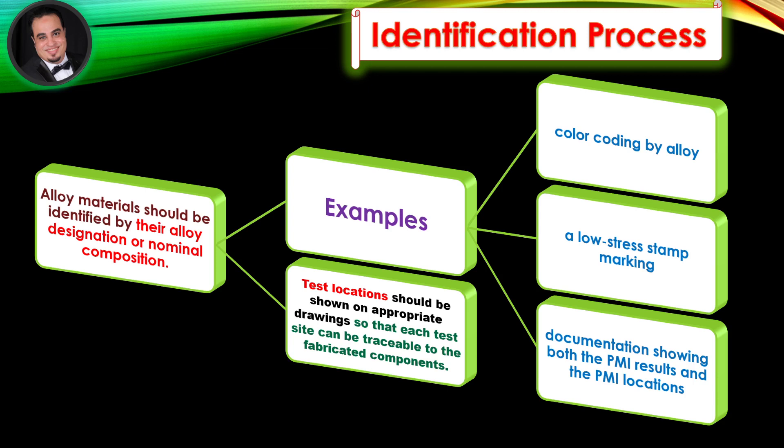Identification process: Alloy materials should be identified by their alloy designation or nominal composition. Examples of some acceptable identification methods are: color-coding by alloy, a low-stress stamp marking indicating that the test has been performed, and documentation showing both the PMI results and the PMI locations. Test locations should be shown on appropriate drawings so that each test site can be traceable to the fabricated components.